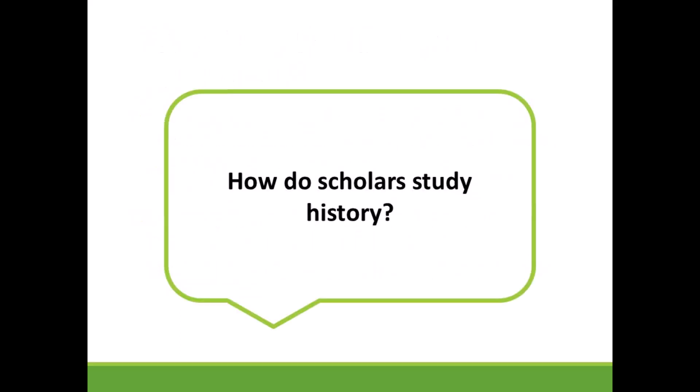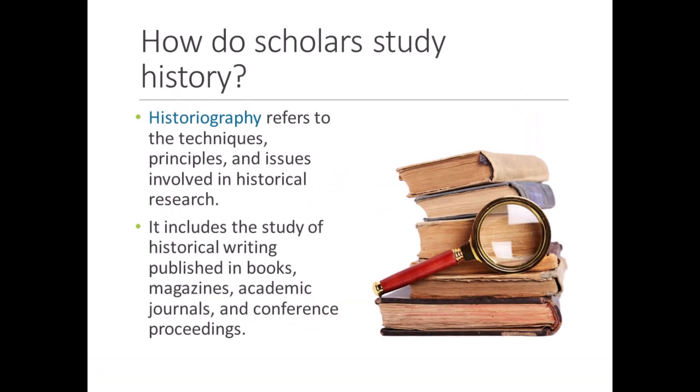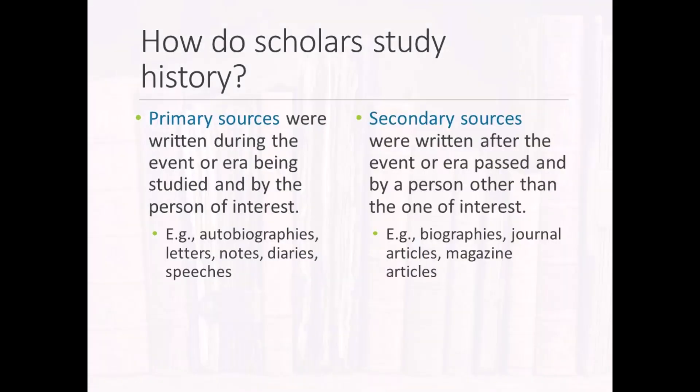Now let's consider: how do scholars study history? Historiography refers to the techniques, principles, and issues involved in the study of history. "Historio" means past, and "graphi" means writings. Historians use a variety of methods to study the past. Many of psychology's earliest contributors published their work in books, magazines, and journals, wrote extensively in their personal journals, and exchanged written letters with other experts. By studying these historical writings, scholars gather a great deal of information about the development of psychology over time.